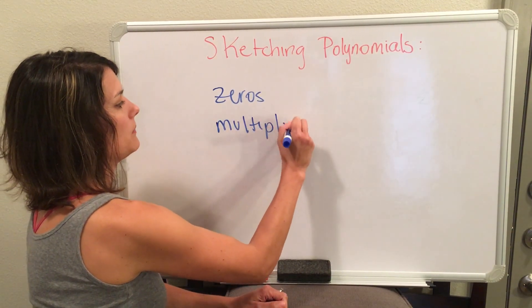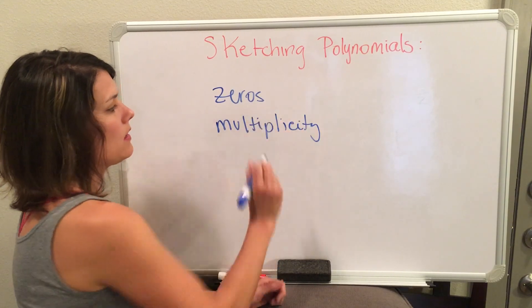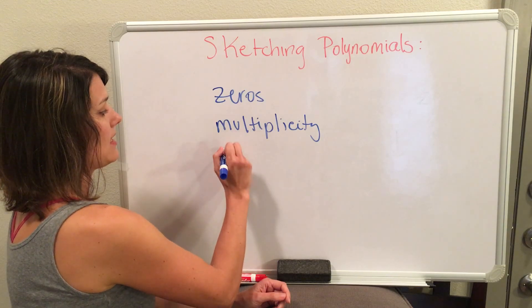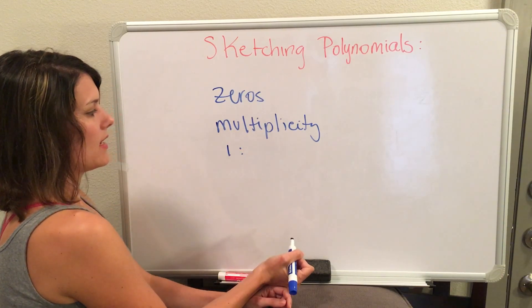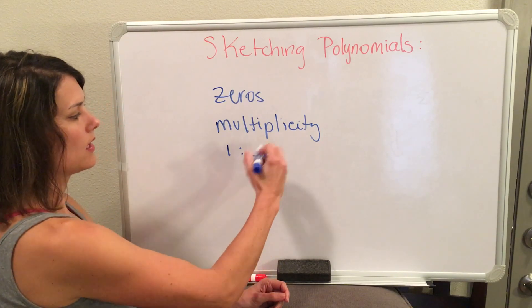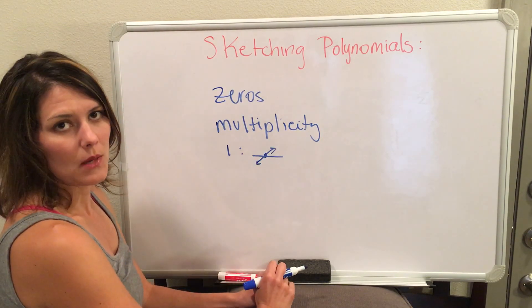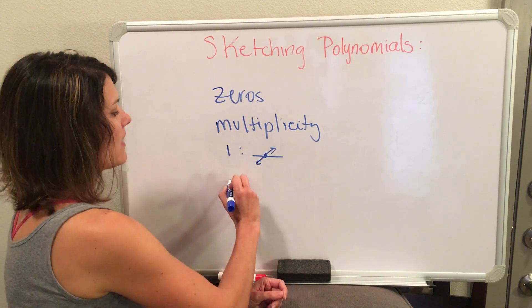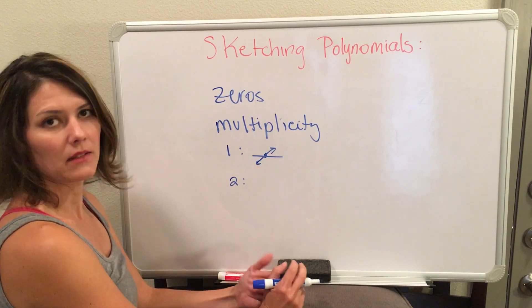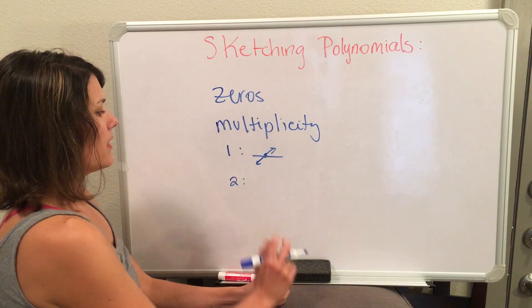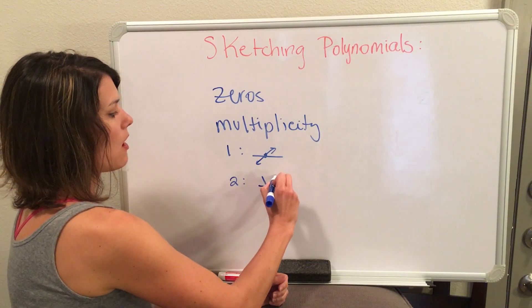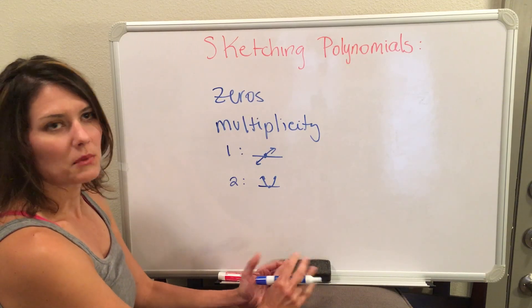There are three types of multiplicity. The first type is if you have a multiplicity of one — your zero will go straight through. So if this is your zero on the x-axis, your polynomial will go straight through that point. If you have a multiplicity of two or a higher even multiplicity, like four or six, then your polynomial will bounce off of it, making it look like a parabola.